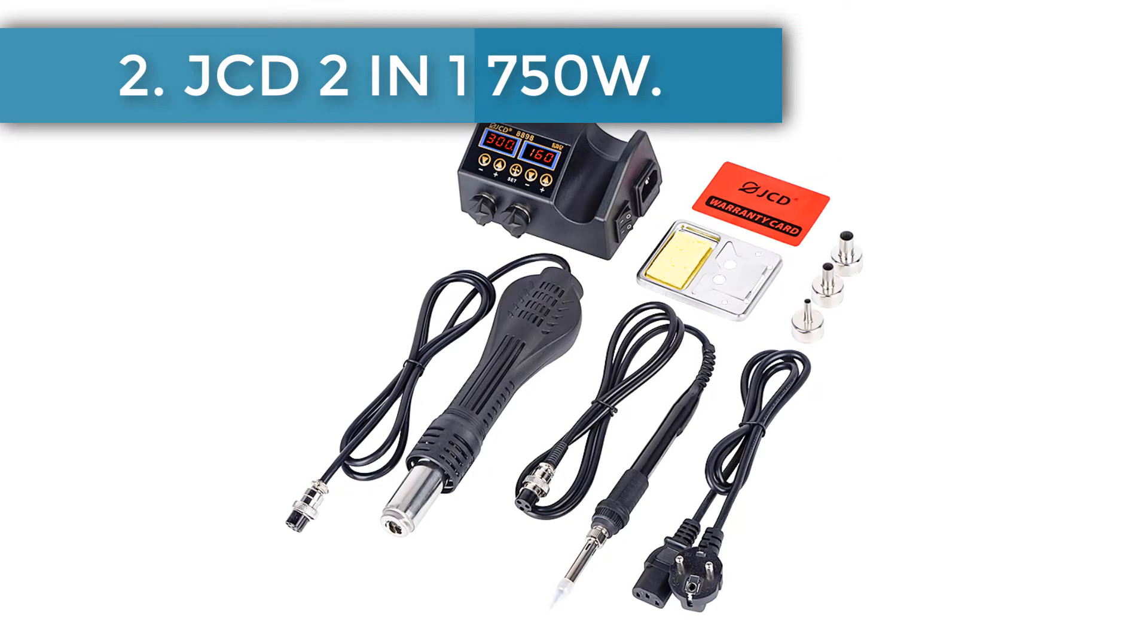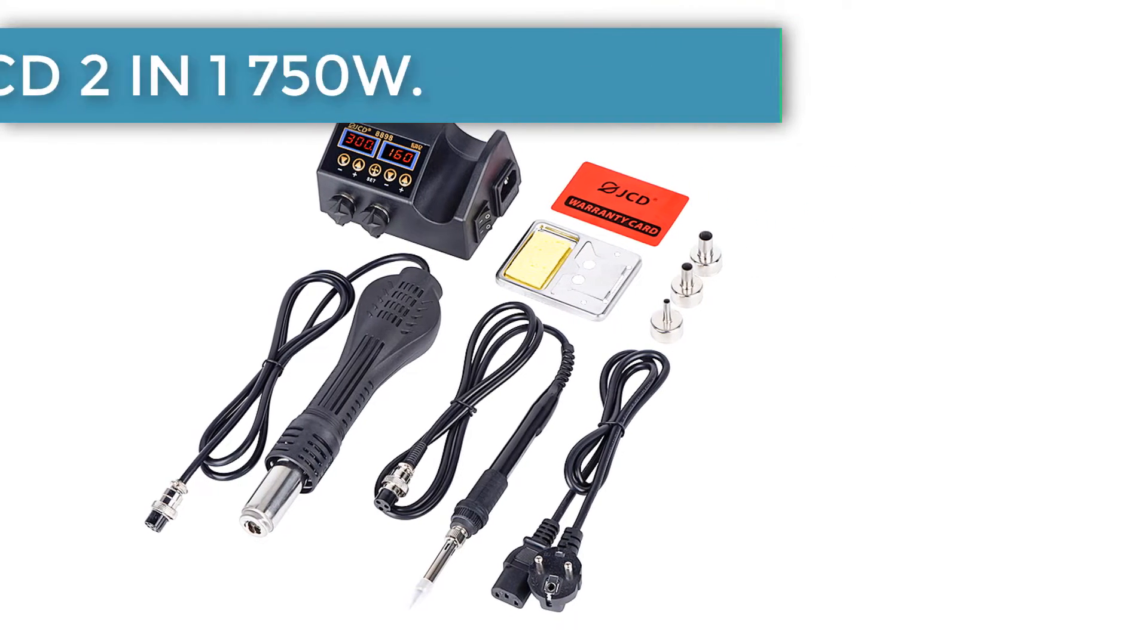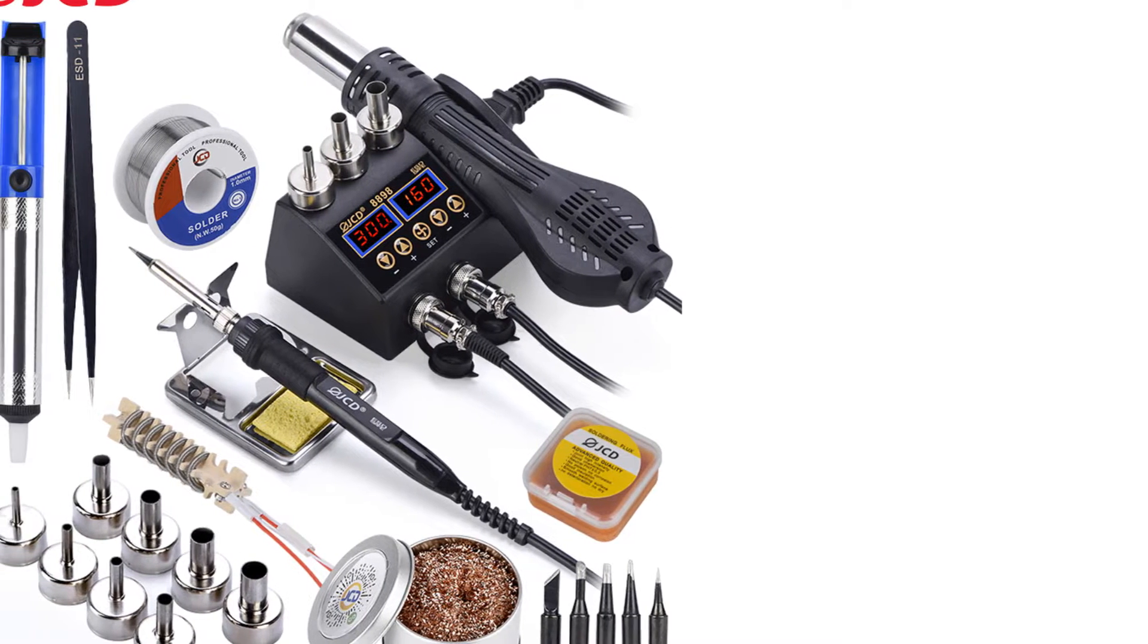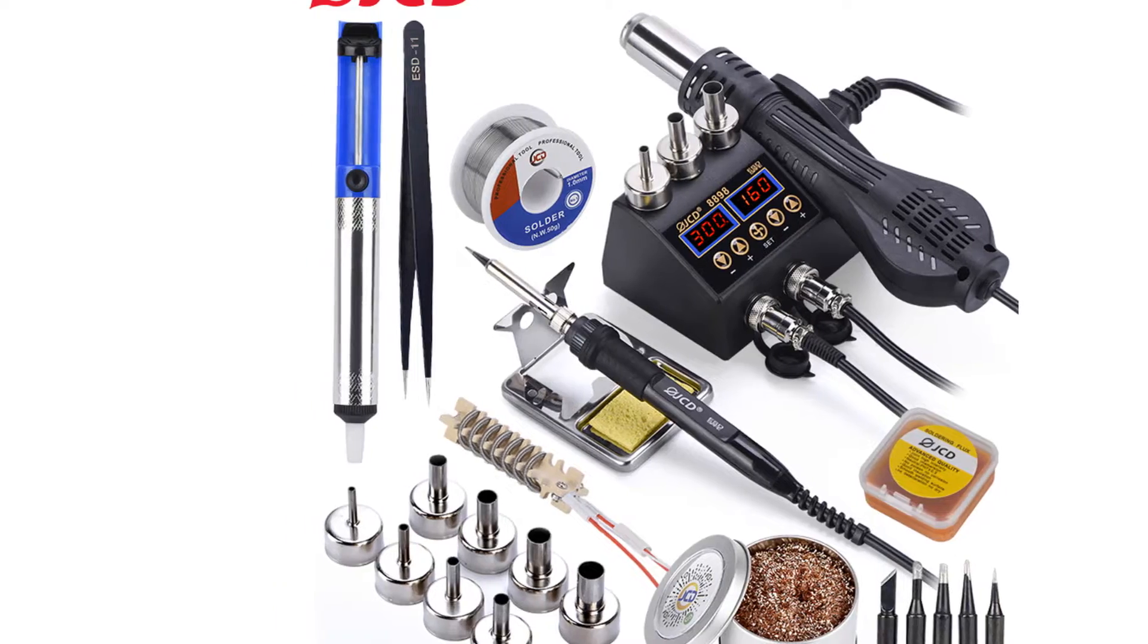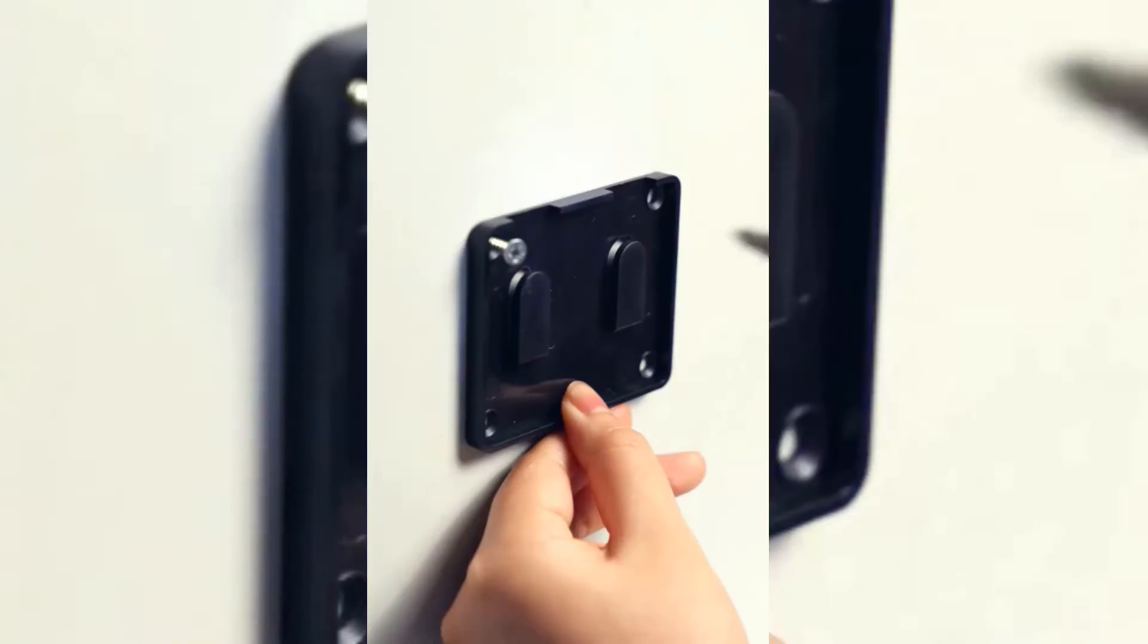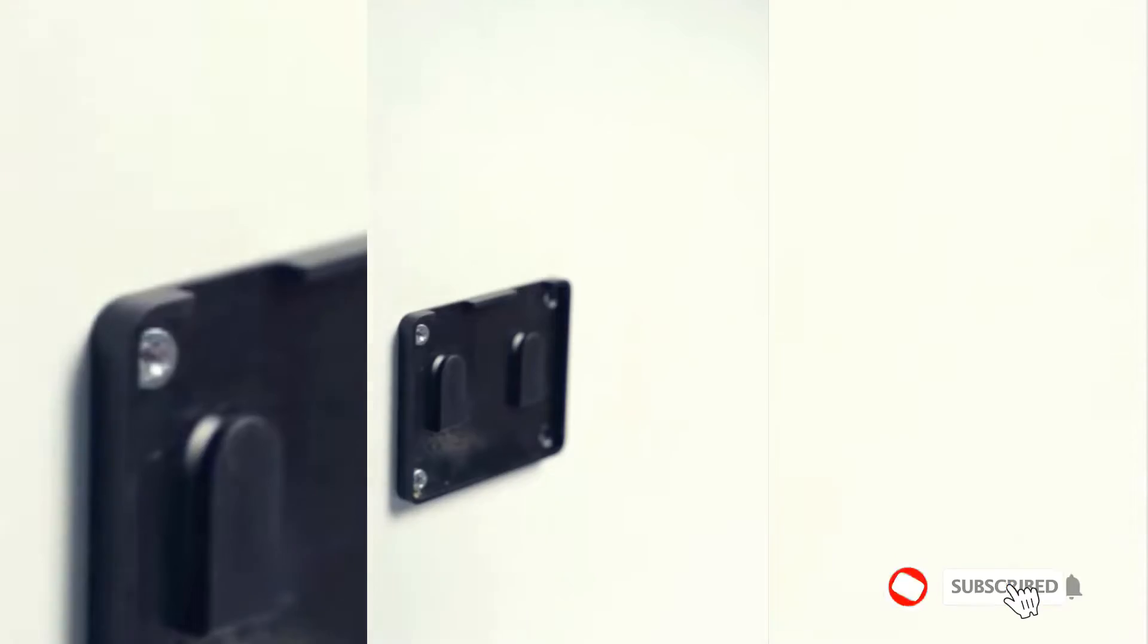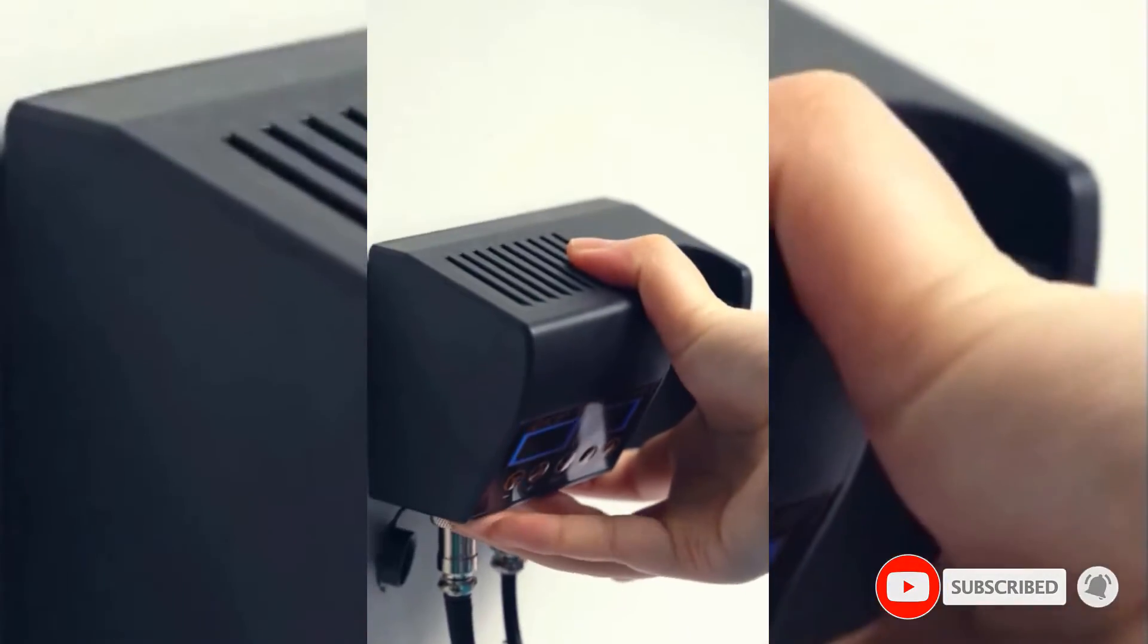Number two: JCD 2-in-1 750 watts. JCD is a Chinese brand specializing in a wide range of welding tools including soldering irons, stations and accessories. Their 750 watt soldering station with the automatic cooling function is the store's best seller with a high rating of 4.9 based on 400 plus customer reviews.